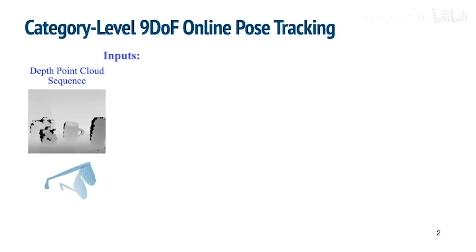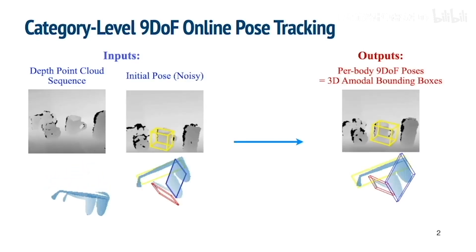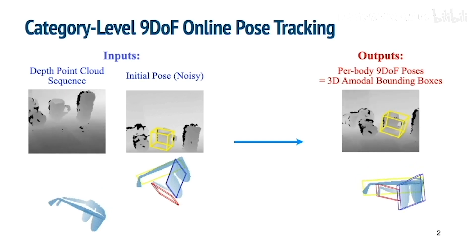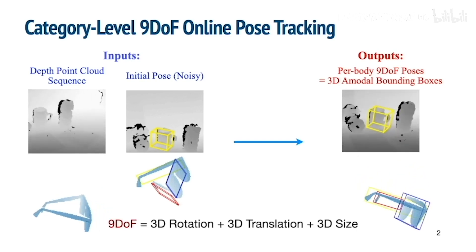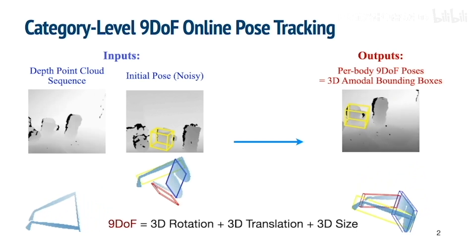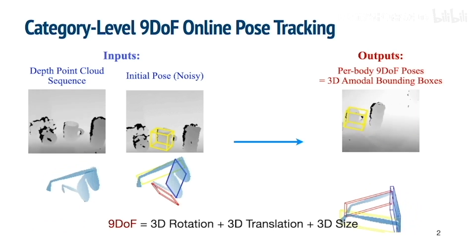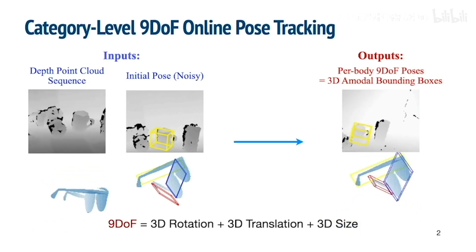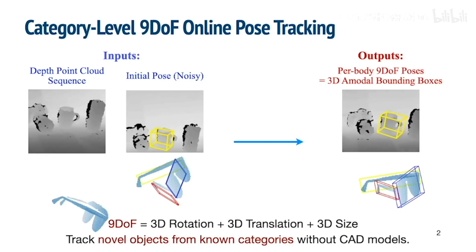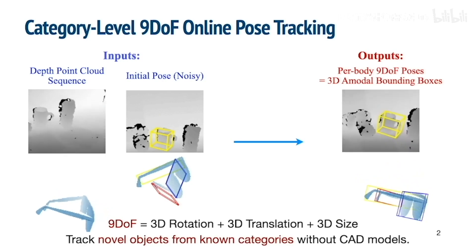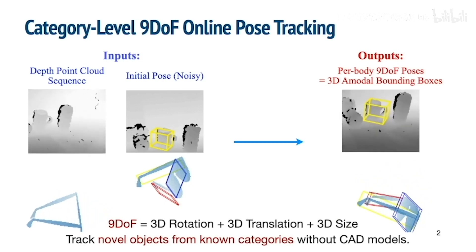Given a point cloud sequence and a noisy initial pose, the goal is to track the per-body 9 degrees of freedom poses, namely 3D rotation, 3D translation, and 3D sizes, which can be represented and visualized as 3D model bounding boxes. Our method is designed to handle novel instances from known categories without CAD models.